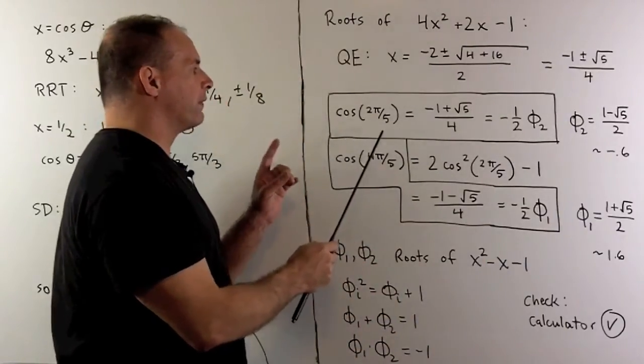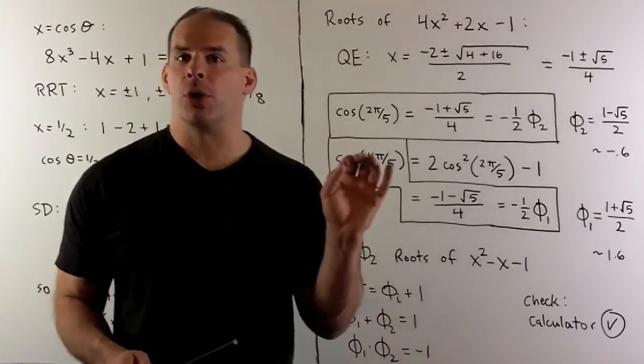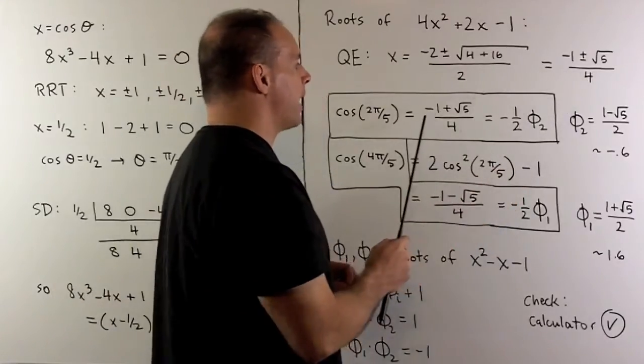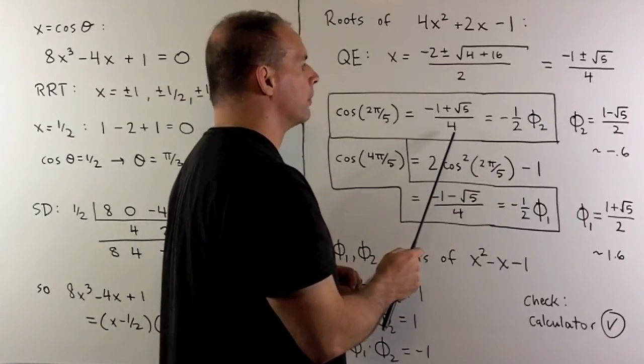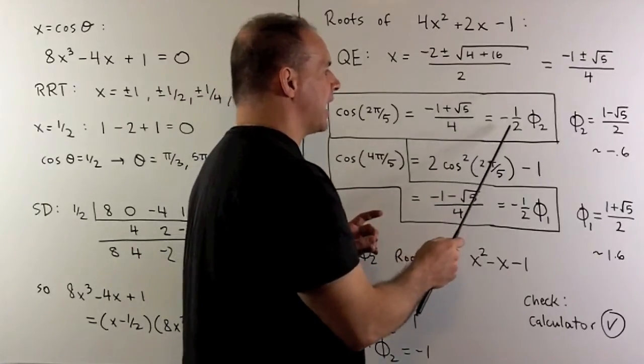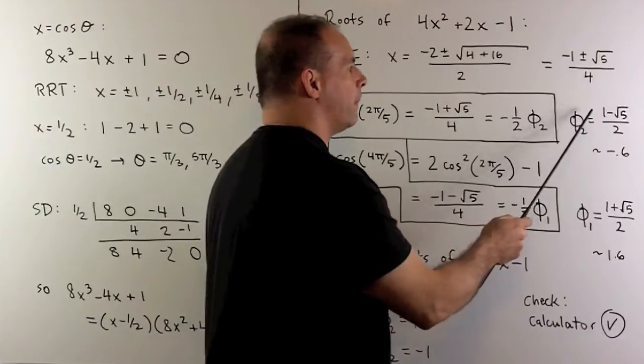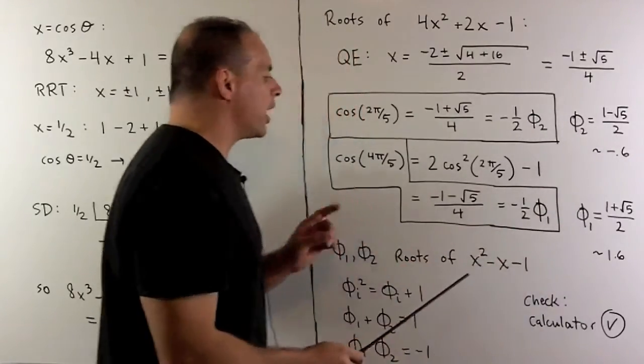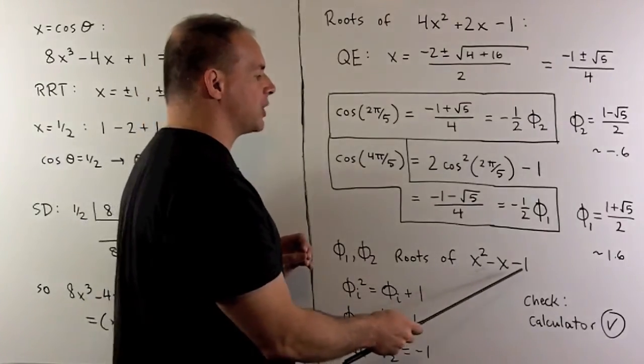For the cosine of 2π/5, we know this cosine is positive. So we're going to choose the positive solution. So it's (-1 + √5)/4. Now that's equal to -1/2 φ₂. φ₂ equals (1 - √5)/2. And what makes this special is that it's a root of x² - x - 1.